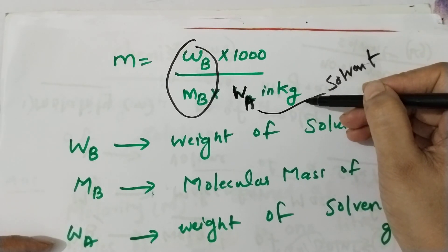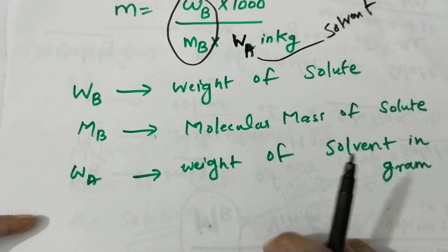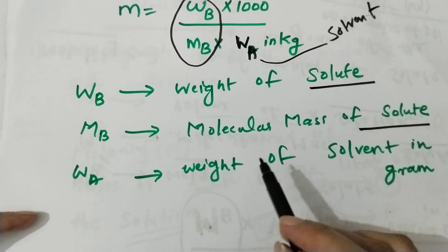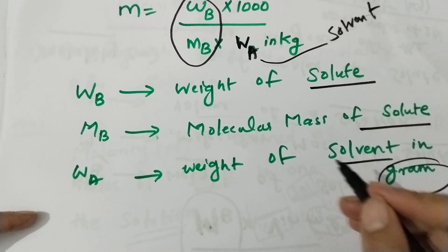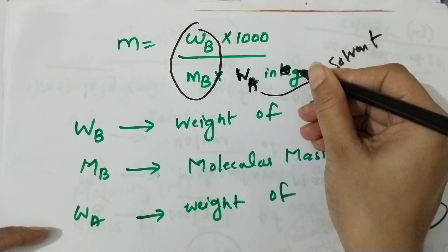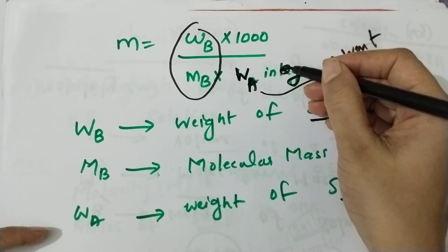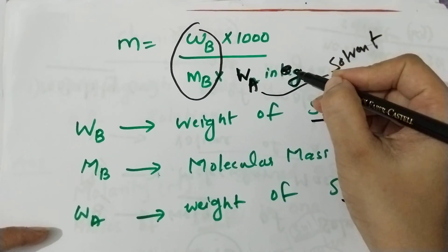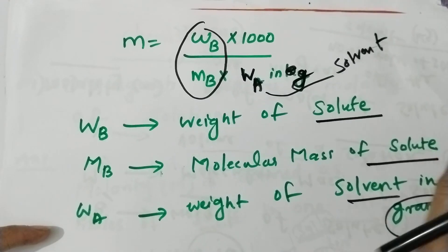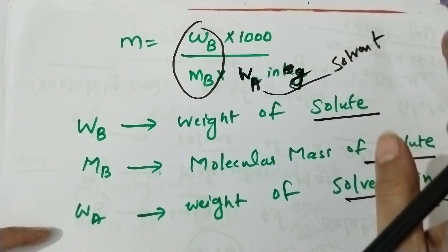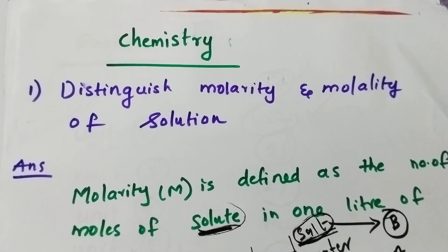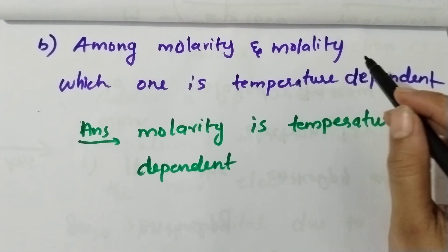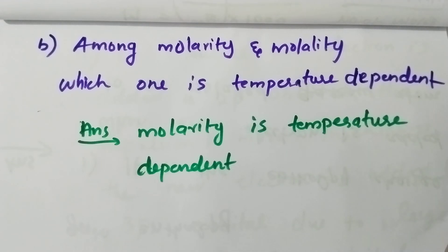For molality: WB is weight of solute, MB is molecular mass of solute, WA is weight of solvent in grams. Grams are raised to 1000 to convert to kilograms. Now we will move to numericals. The definition is done. Next: among molarity and molality, which one is temperature dependent?